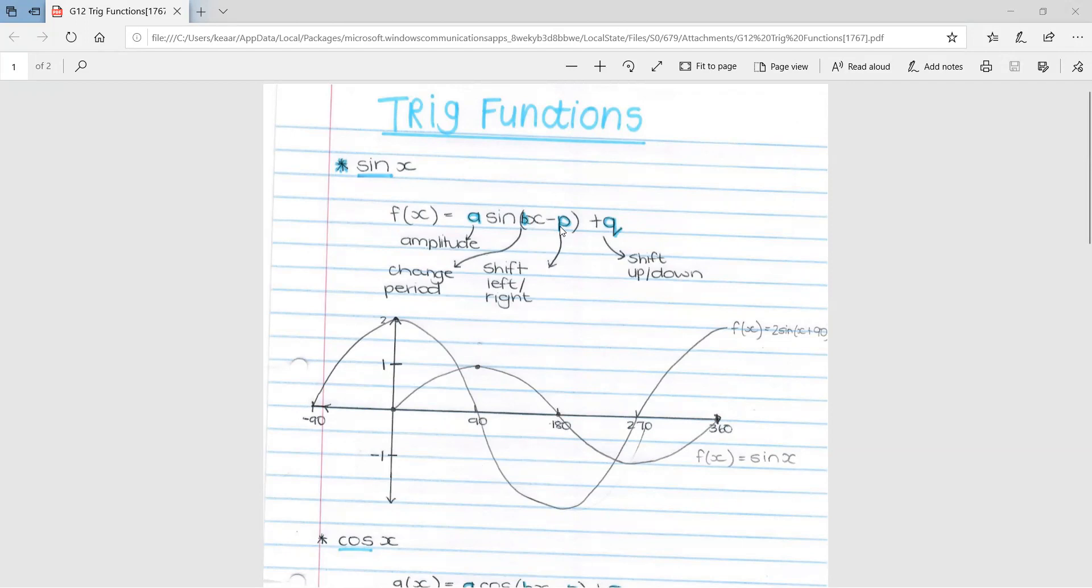The next thing is your p value. This shifts your graph left and right. If you have plus p, then your graph moves to the left. If you have a minus p, your graph shifts to the right. For example, if they had x minus 30, you would start 30 degrees to the right. So your graph would start somewhere here and go there.